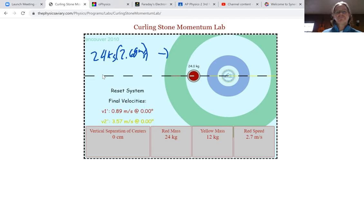And let me stop this and click on the red and bam. So now it's a little complicated because now I have afterwards, I've got 24 kilogram stone or whatever they call that thing. I don't know. I'm not Canadian. I'm going at 0.89 meters per second. But that's not all the momentum. We have some momentum left in the yellow. So I have to find so that's 12 kilograms times 3.57. And I want to know how this amount compares to that amount.